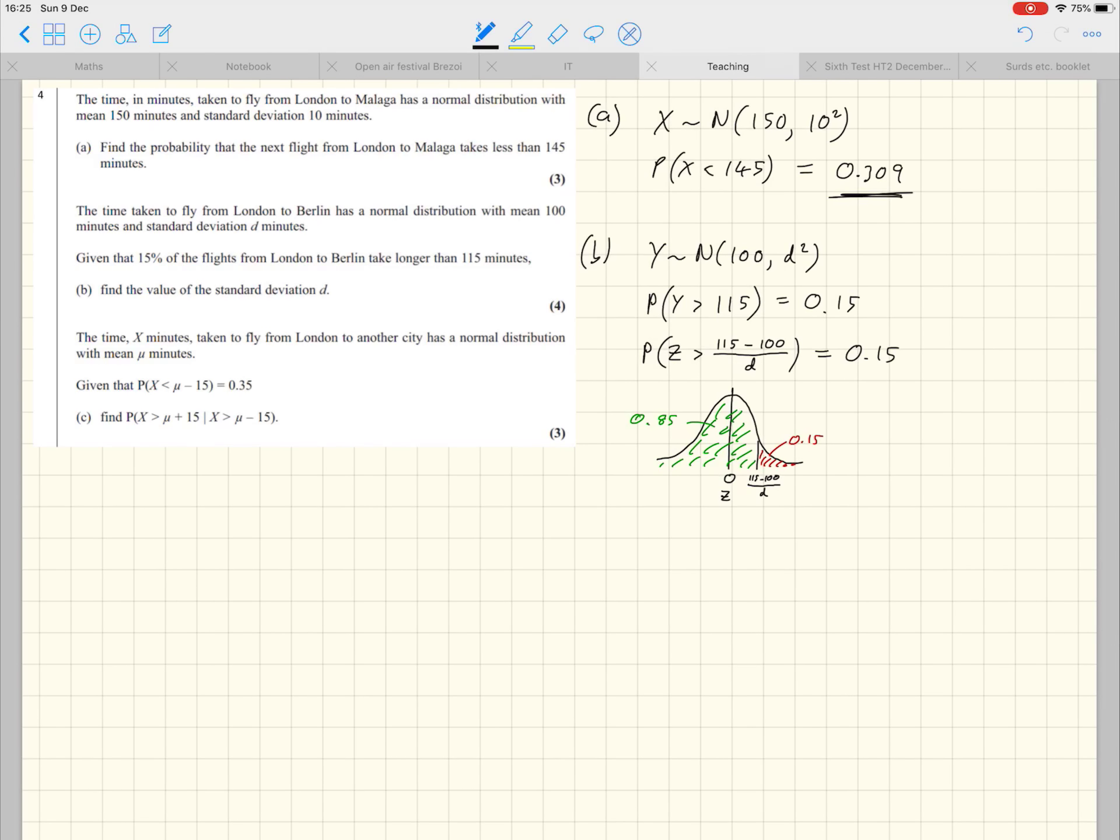My method here would be to say that I'd write probability that Z is less than, I'm going to simplify that numerator because it's just 15 over d, is 0.85. Grab your calculator, go to inverse normal, we're going to use standard deviation 1, mean 0, and the area 0.85. That's going to give us that the value in here is equal to 1.0364, straight out of the calculator. And that gives us the final value of d by simply rearranging of 14.47.